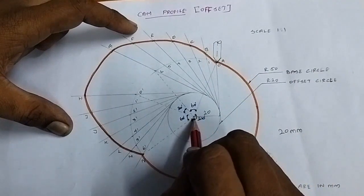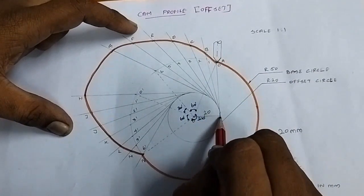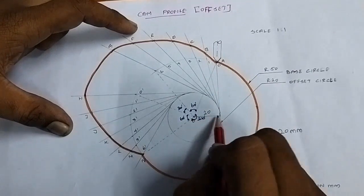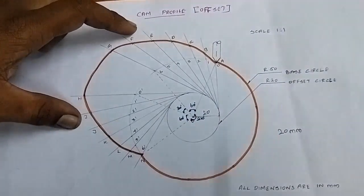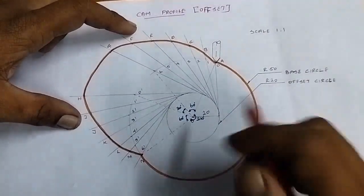For the offset effect, the offset of the follower from the cam axis is 20 mm. The follower axis is offset 20 mm from the cam axis. Next, mark the angular positions for the forward and return strokes on the cam.